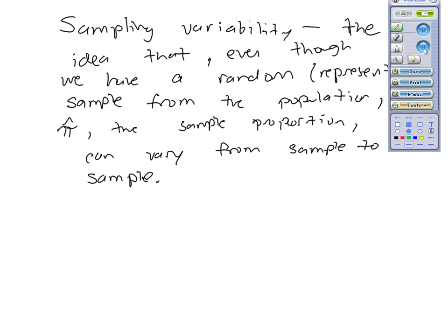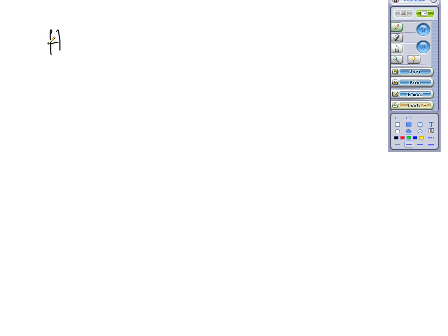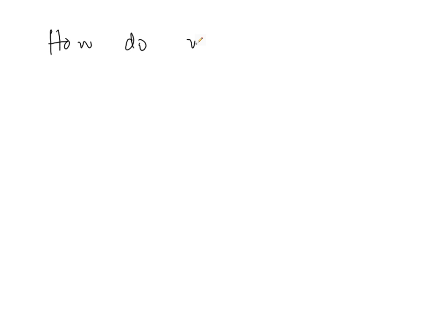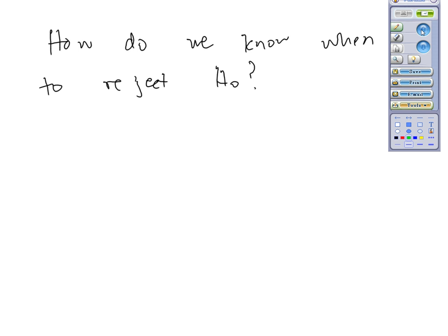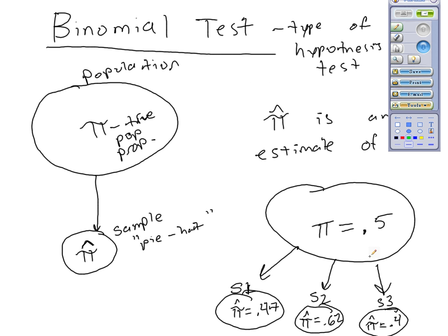So the question then becomes, how do we know when to reject a null hypothesis? In other words, if we want to test the hypothesis that pi is greater than 0.5, if we observe 0.62, is that enough to reject and say, yes, we believe the population has a population proportion greater than 0.5?